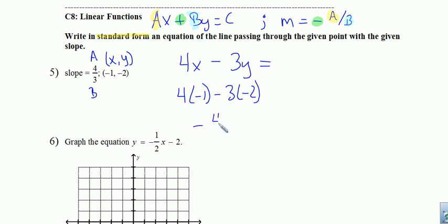Four times negative one is negative four. Negative three times negative two is positive six. Negative four plus six is two. And we have our equation of our line. Let's go ahead and box it up, our final answer.